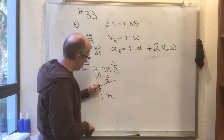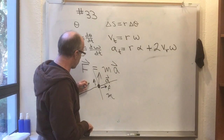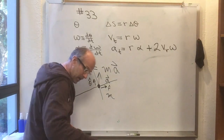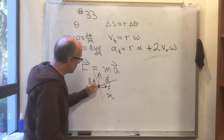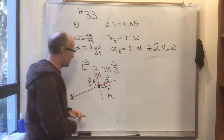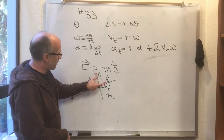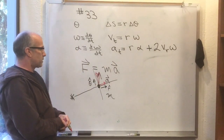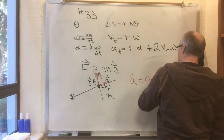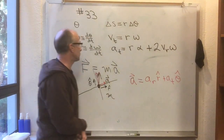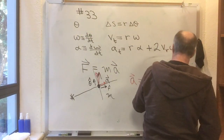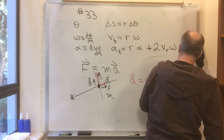We call the unit vector pointing in the radial direction r-hat, and the unit vector pointing in the tangential direction theta-hat. We can break the acceleration up into a component in the radial direction and a component in the tangential direction. So we write a equals a_radial times r-hat plus a_tangential times theta-hat. Now the interesting thing is that a_tangential equals r alpha plus the correction term 2 v_r omega.